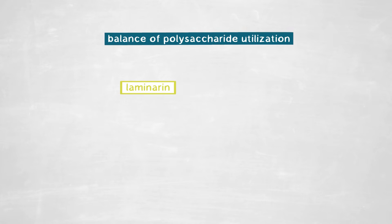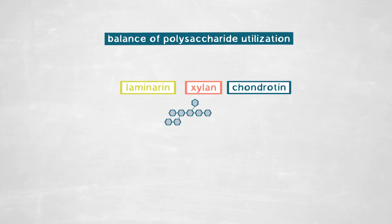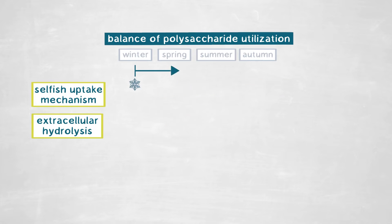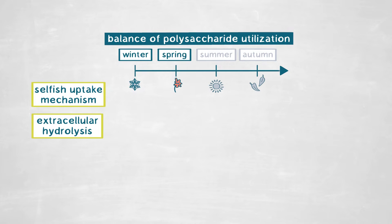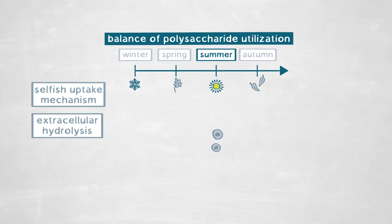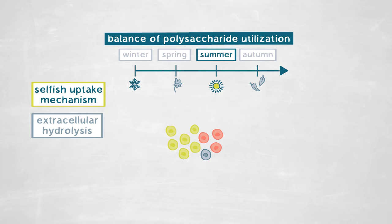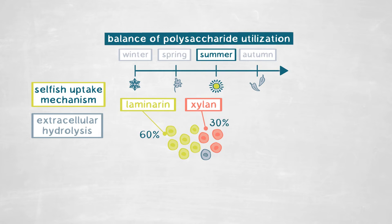We used as substrates laminarin, xylan, and chondroitin - three polysaccharides of different complexity that all occur in the marine environment. By incubating bacteria with these three fluorescently labeled polysaccharides, we could see that in the very beginning of the year, in winter and spring, there was little polysaccharide utilization through both mechanisms. But going into summer, we observed a rapid increase in the selfish uptake of laminarin and xylan. Surprisingly, already 60% of all cells could take up laminarin through the selfish mechanism in summer, and about 30% used xylan this way.